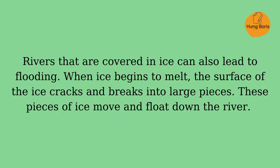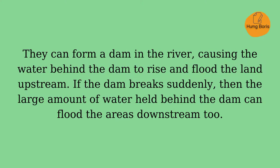Rivers that are covered in ice can also lead to flooding. When ice begins to melt, the surface of the ice cracks and breaks into large pieces. These pieces of ice move and float down the river. They can form a dam in the river, causing the water behind the dam to rise and flood the land upstream. If the dam breaks suddenly, then the large amount of water held behind the dam can flood the areas downstream, too.